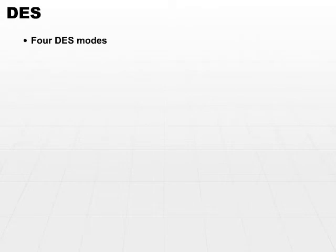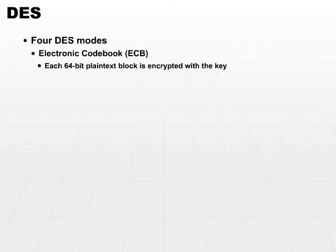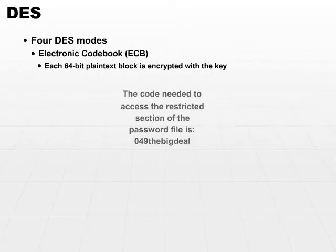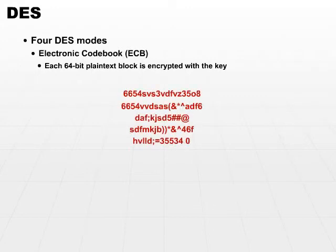The DES encryption standard works with four different modes. Each mode is a little more secure than the previous mode. We'll start with the simplest mode, that's Electronic Code Book or ECB. ECB takes each 64-bit plaintext block and encrypts it with the key, and that's it. So each 64-bit plaintext block becomes an encrypted 64-bit block, or ciphertext block.